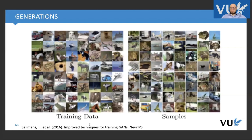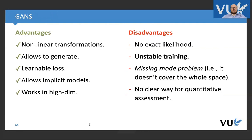What are advantages? Definitely we have nonlinear transformations and very easy procedure for generating. This is the same as for the density networks. We have learnable loss. We allow implicit models, so we don't need to define anything in advance. And it works in high dimensional problems. This is really good.